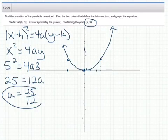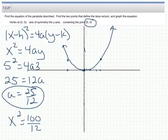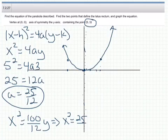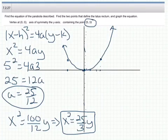Now we know the equation of our parabola. We know x squared is equal to 4 times a, or 100 divided by 12y. And reducing that equation gives us x squared equals 25 over 3y. So there's the equation of the parabola.